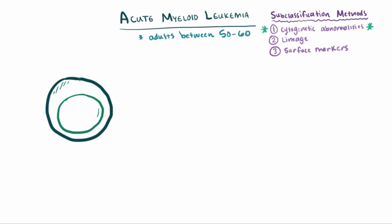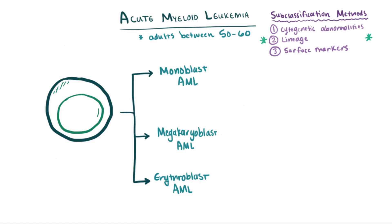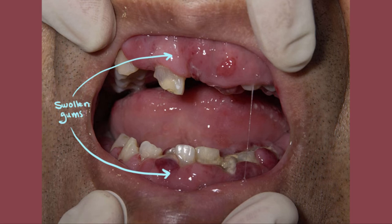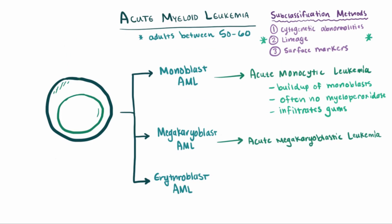We can also characterize AML by lineage. Just like lymphoid blasts can go on to be T or B lymphoblasts, you could have erythroblast AML, megakaryoblast AML, or monoblast AML. One important subtype is monoblast AML, or acute monocytic leukemia. These monoblasts often lack myeloperoxidase, but what we can look for instead is infiltration of the patient's gums — a classic sign of acute monocytic leukemia, where the gums are clearly swollen.